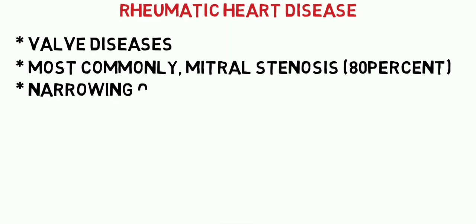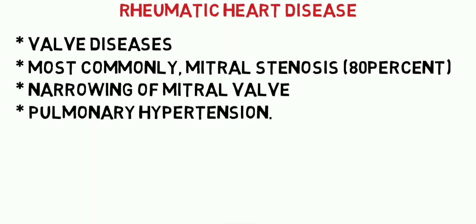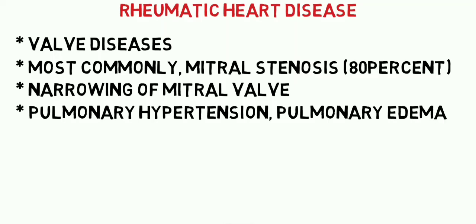Mitral stenosis involves narrowing of the mitral valve, giving it the classical fish mouth appearance. This leads to accumulation of blood inside the left atrium, increasing pressure in the left atrium and pulmonary veins, causing pulmonary hypertension. Pulmonary hypertension increases hydrostatic pressure in the pulmonary circulation, leading to pulmonary edema. In severe cases, atrial fibrillation can also occur, which is associated with increased mortality.